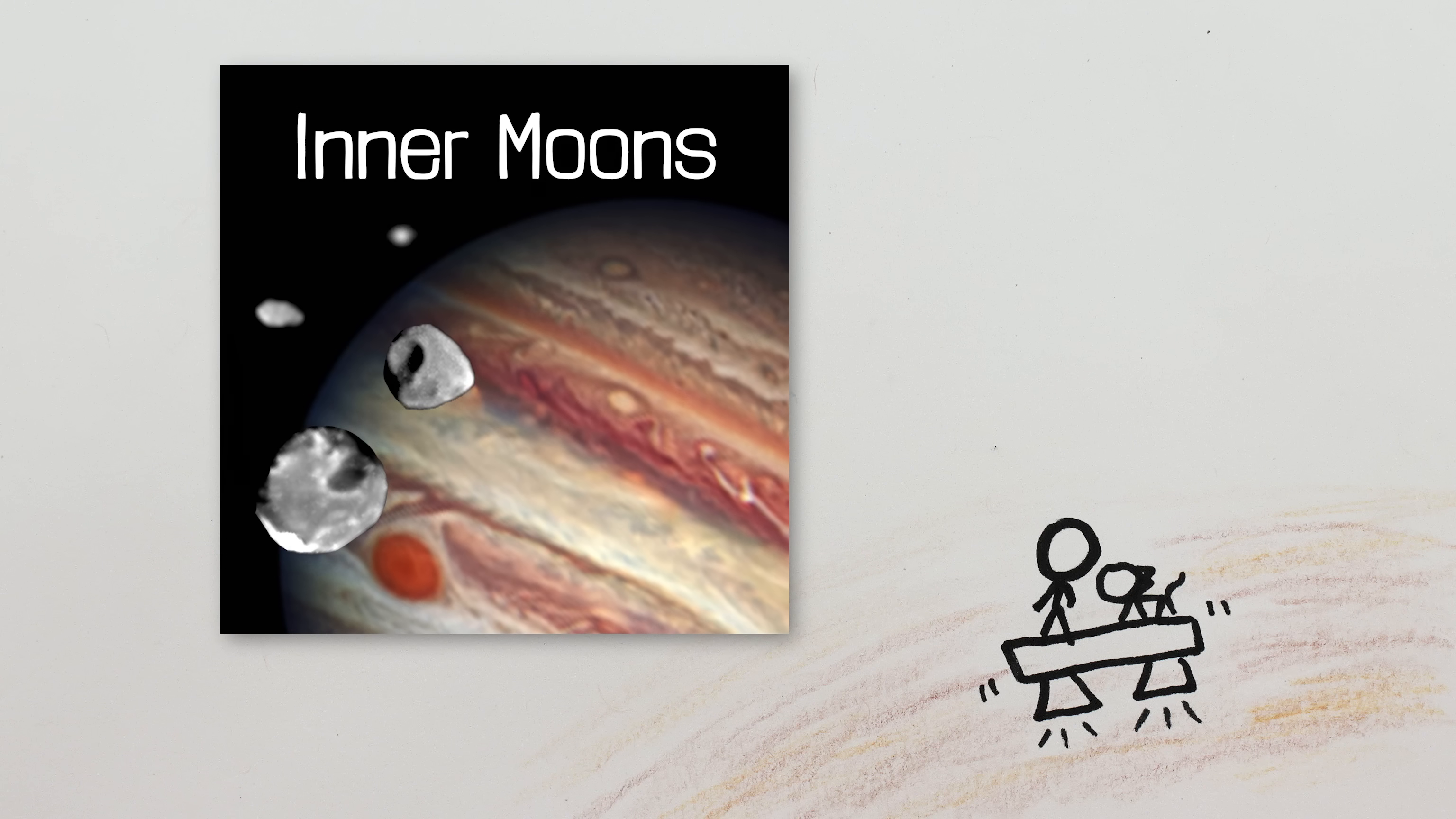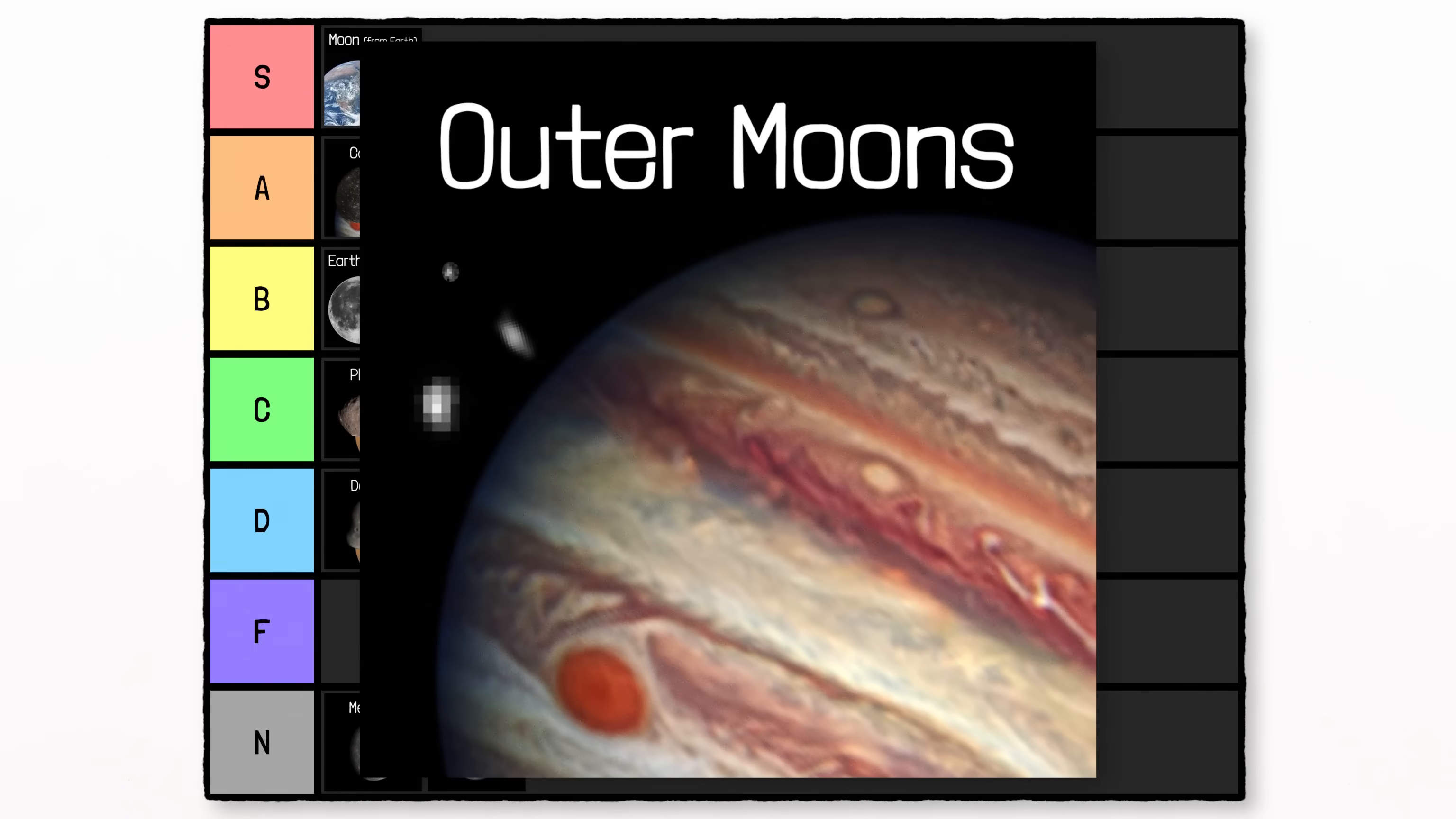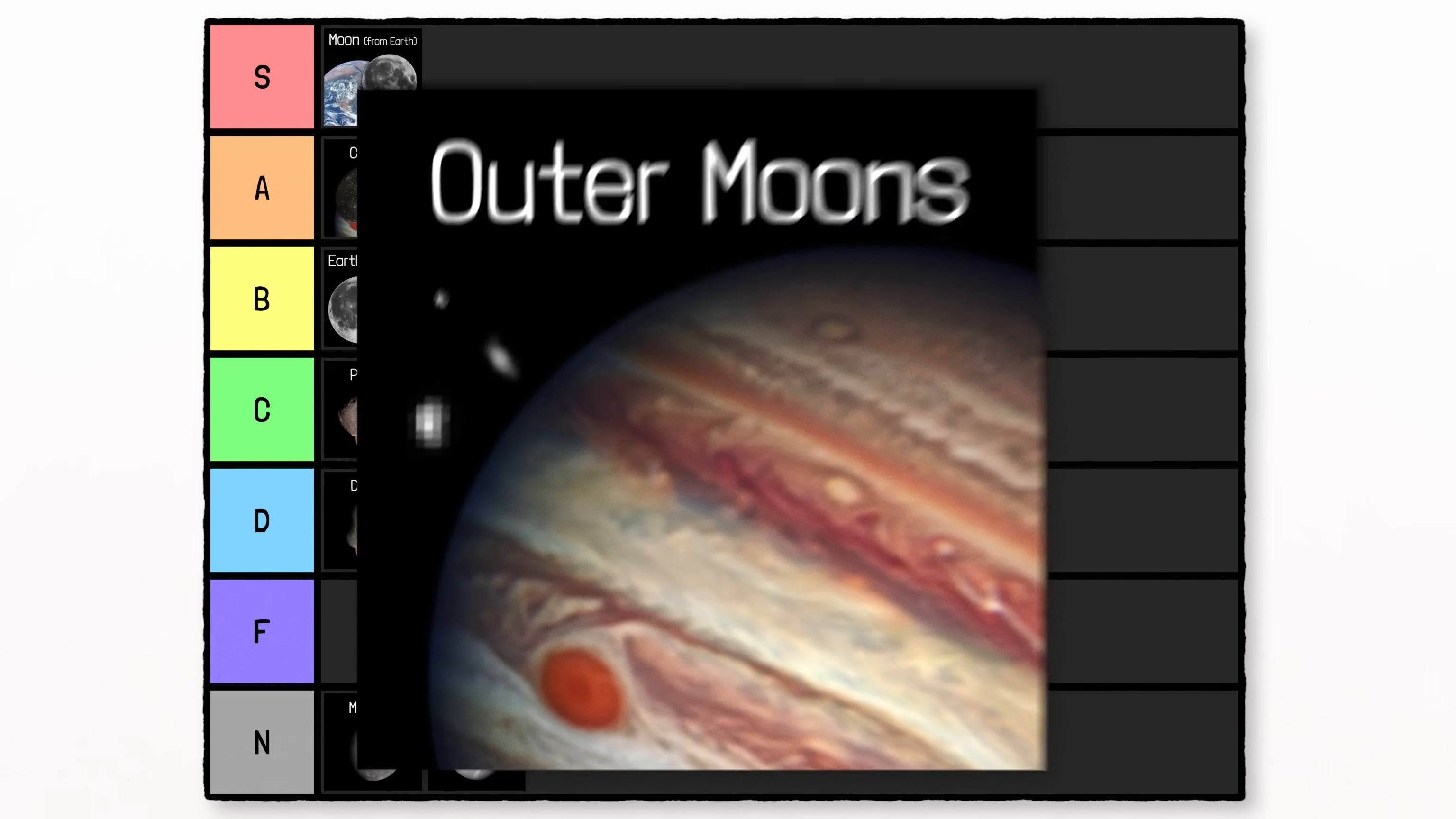Jupiter's smaller inner moons all have partial eclipses substantial enough to be interesting viewing by the human eye with eclipse glasses, so they get C-tier, while all of its outer moons are too small and far away for their really boring partial eclipses to be visible without a serious telescope, F-tier.